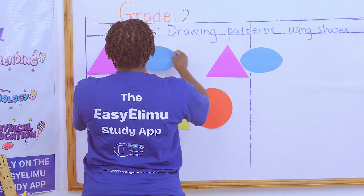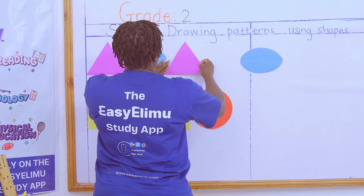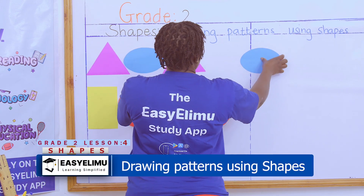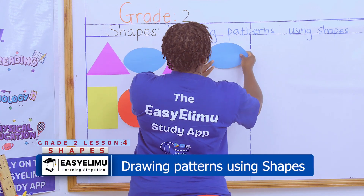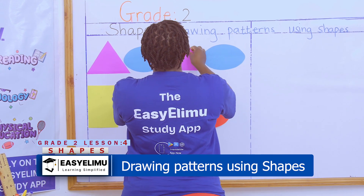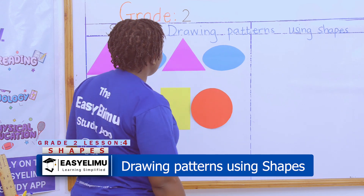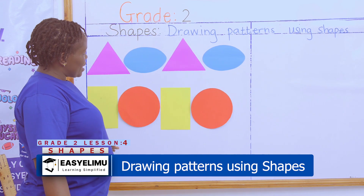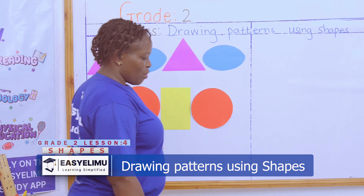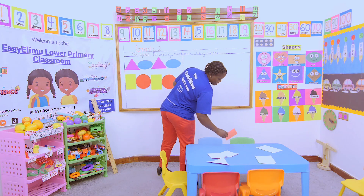This one is from the triangle, oval, triangle, oval. So even if you're told to complete the pattern or copy the pattern, you are able to see what exactly has happened.